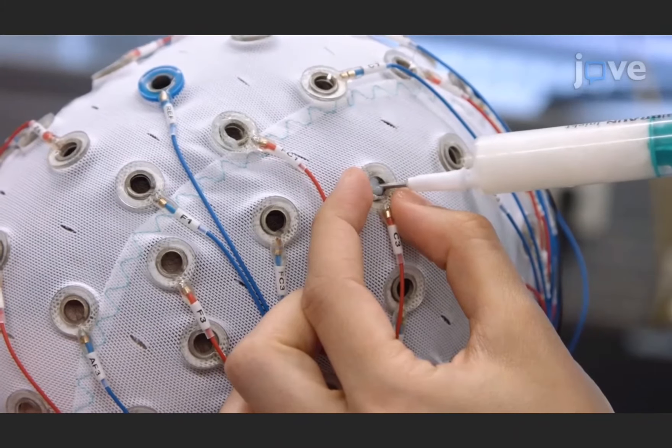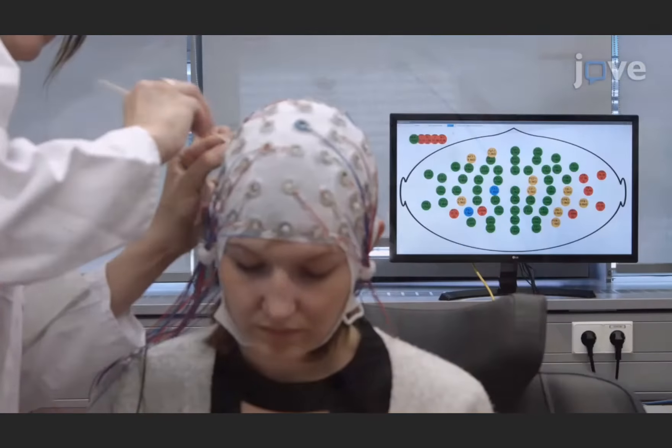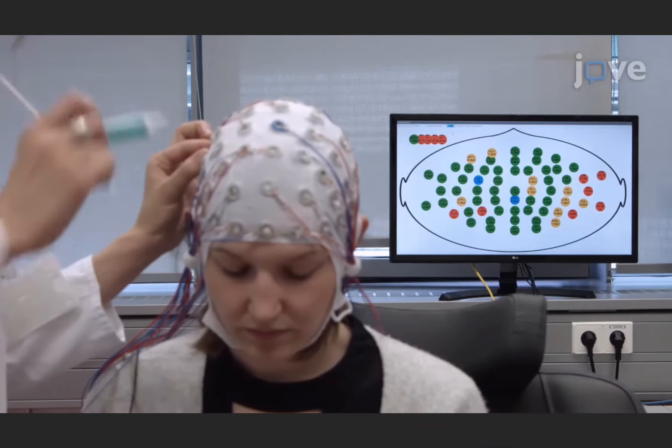Next, apply conductive gel to the electrodes and check that the EEG electrode impedances are below 5 kOhms.